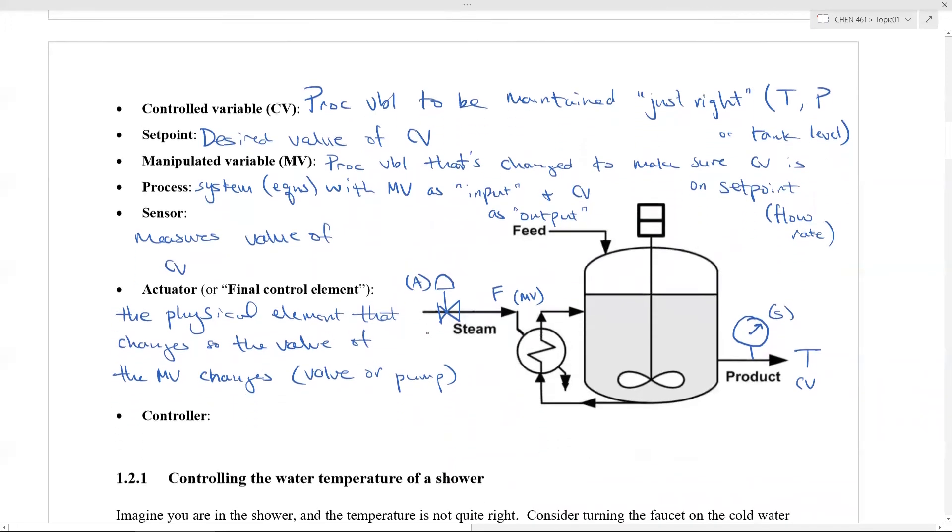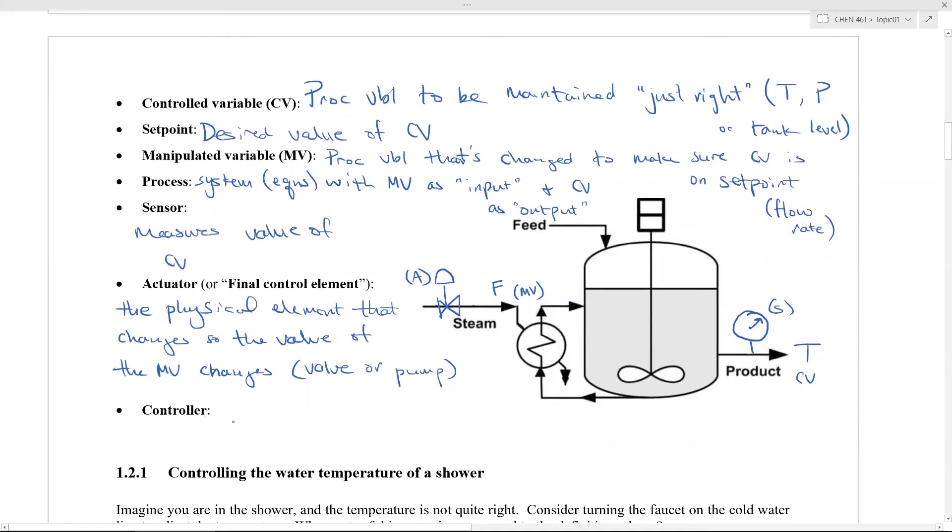Finally, you have the controller. And the controller is a computer that compares the CV, actually the sensor value really, because we don't really know the value of the CV. We have the sensor value, which might not be accurate. Or it might be delayed. Like maybe the sensor takes a long time to really figure out what's going on. So it compares the sensor value to the set point then changes the actuator to compensate. Well, it doesn't change the actuator to compensate if you're fine. But if you start to get off set point, that's when it changes the actuator to compensate.